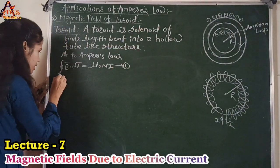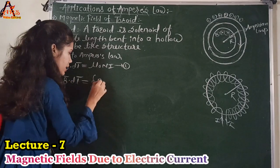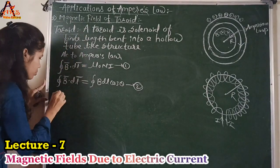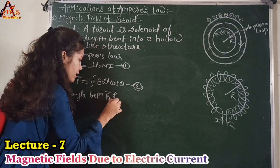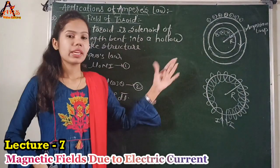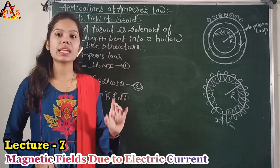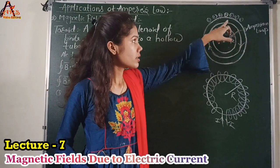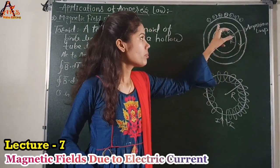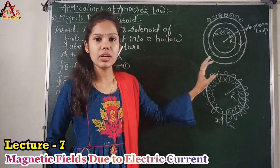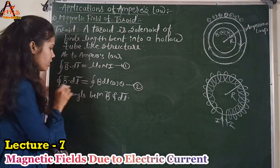We can write this equation as the closed integral of B·dl equals the closed integral of B dl cos θ — let this be equation 2 — where theta is the angle between B-vector and dl-vector. To use Ampere's law we must follow its rules. The first rule is you have to consider one closed imaginary loop, called the Amperian loop. In this toroid, the middle circle is considered as our closed Amperian loop, and this is the direction of tracing of that loop. The direction of tracing is very important to determine the direction of the vector dl.